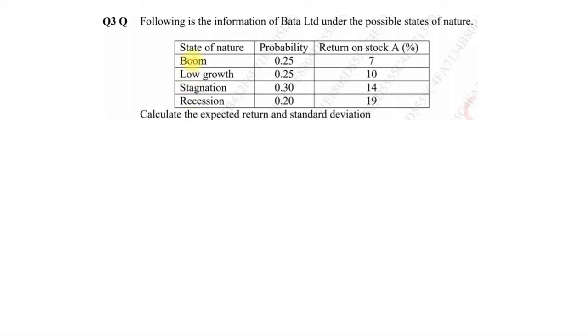The very first question asked was: following is the information of Bata Limited under the possible states of nature. They are giving you the state of nature that is the boom, low growth, stagnation, recession, probability and return on stock. Calculate the expected return and standard deviation. Two things have been asked in this sum.